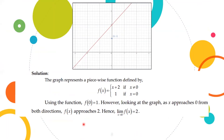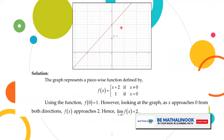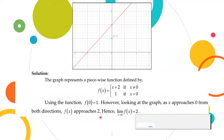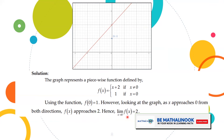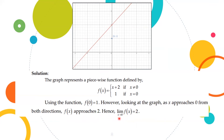Using the function, f(0) is equal to 1. However, looking at the graph, as x approaches 0 from both directions — meaning from the left and from the right — f(x) approaches 2. Therefore, the limit of f(x) as x approaches 0 is equal to 2.